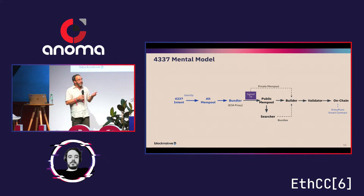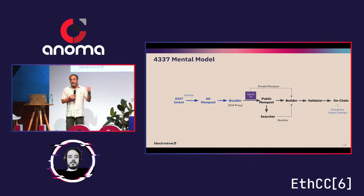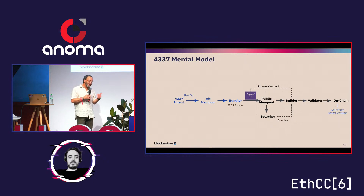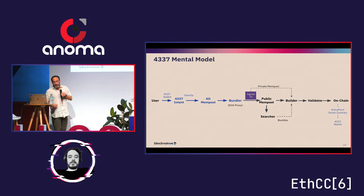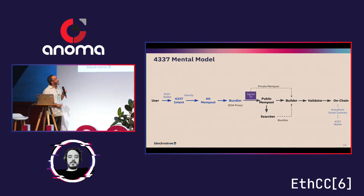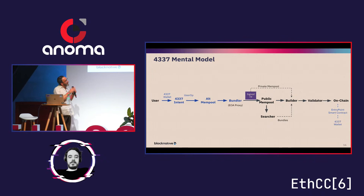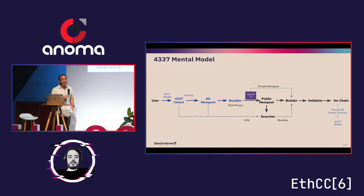Users don't submit transactions — they submit intents in the form of user ops. The basic idea is the user intends to do something, and the bundler bundles them all together and turns them into signed transactions. The final step involves a 4337 wallet. Just as we have special elements in the transaction flow for MEV with private mempools and searcher bundles, we're also going to have additional flows here for MEV.